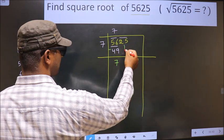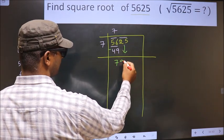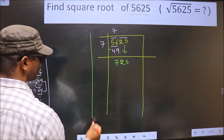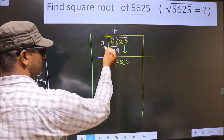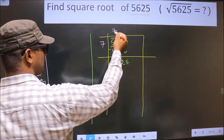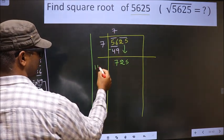Now this pair will come down, making it 725. Now here we should add these two numbers, that is 7 plus 7 is 14.